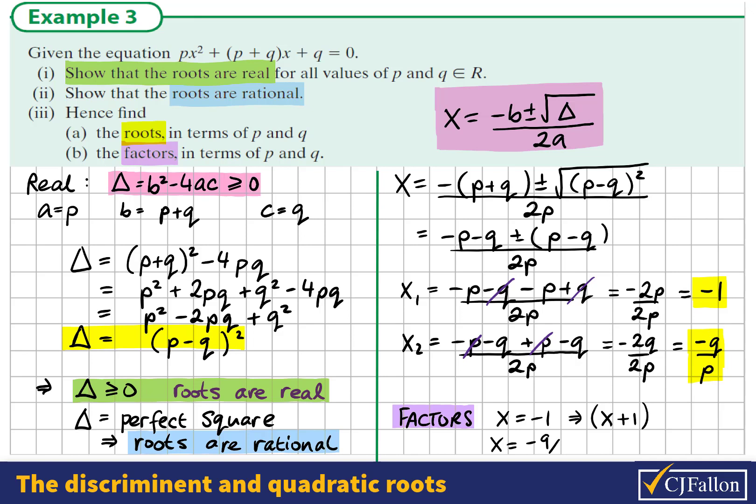And if we have x = -q/p, we could see multiplying both sides by p and adding q to both sides, we see that px + q is the related factor.